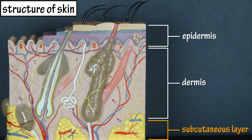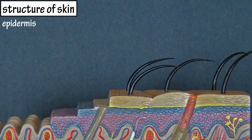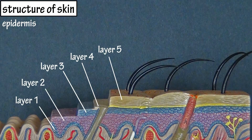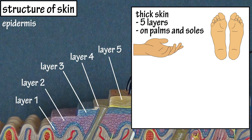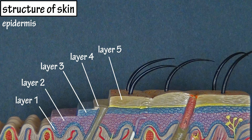I will also be drawing in some components that are not actually on this model. Let's start by looking at the epidermis. The epidermis consists of four to five layers depending on the type of skin. Thick skin has five layers and it is found in the palms of the hands and on the soles of the feet. Thin skin has four layers and is what covers most of the body. The skin model we're looking at has all five layers.